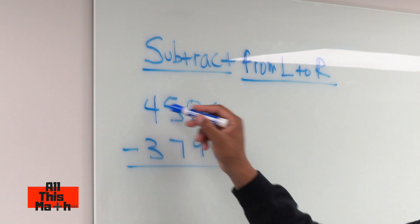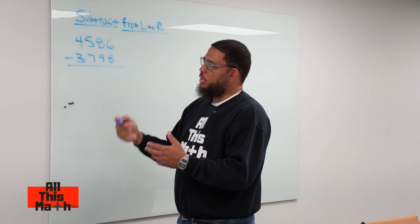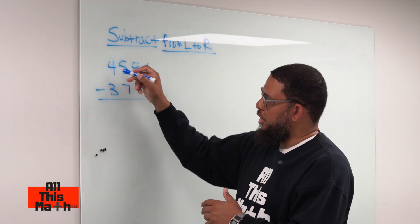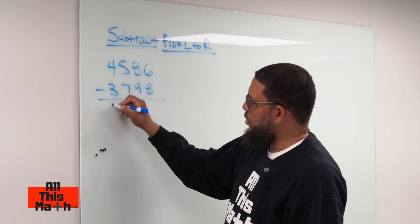So we can think of this as 4,586, which it is, minus 3,798. But what if we subtracted each part of the numbers by place value? Like, what if we said 4,000 minus 3,000? So that leaves us with 1,000.